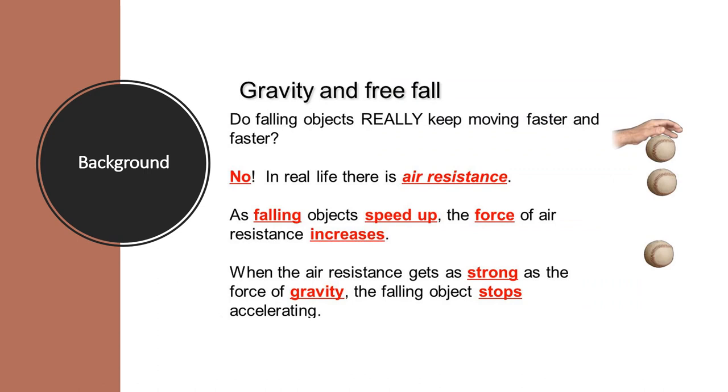When gravity pulls an object towards the earth, it speeds up, but it doesn't keep speeding up till it hits the ground. Depending on what height an object falls, the object will gain speed. But there will come a point where the object's speed will not increase anymore. This is because of air resistance. When the air resistance gets as strong as the force of gravity, then the falling object stops accelerating. That is when the object has reached its maximum drop velocity.